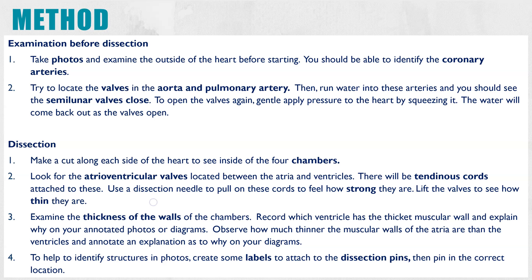For the method, before you do any dissecting you can identify some external structures. Take photos of the outside of the heart to identify the coronary arteries. Try to locate the aorta, the pulmonary artery, and the semilunar valves within them. If you run water through tubing into the aorta and pulmonary artery, it will cause the semilunar valves to close by creating higher pressure behind the valve compared to the ventricles. To open them, squeeze the heart gently to create more pressure in the ventricle, and the water will come back out.